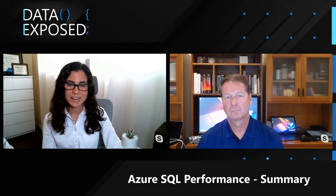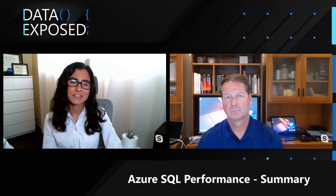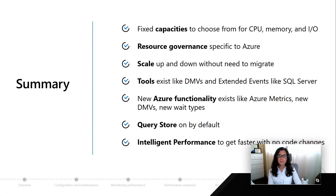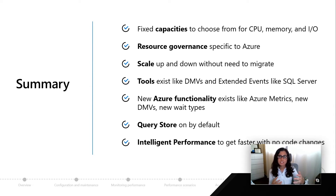That wraps up Module 4, and we've learned a lot. Let's take a look at a summary. We learned from Bob about the different capabilities and capacities when it comes to CPU, memory, and I/O. We also talked about the limits available in Azure, and how you can scale up or down without a lot of downtime — for example with hyperscale. We also learned about tools such as DMVs and extended events, and how they're very similar to what you see in SQL Server.